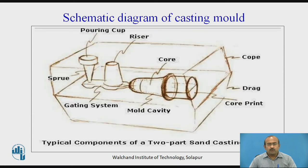Let us have a look at the schematic diagram of casting mold. This diagram explains the typical components of a two-part sand casting. You can see the cope half and drag half, where particular elements of the mold are present, like a pouring cup, sprue, gating system, mold cavity, core, core print, and riser.